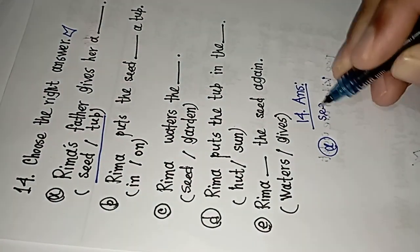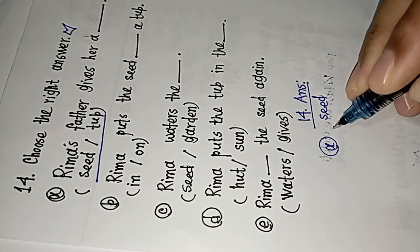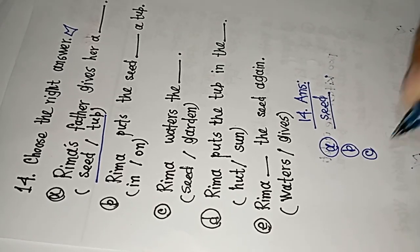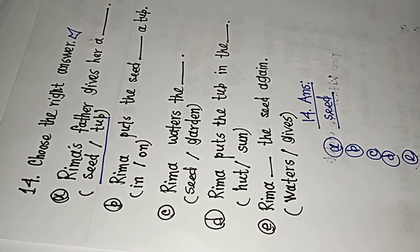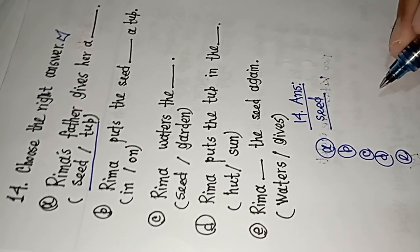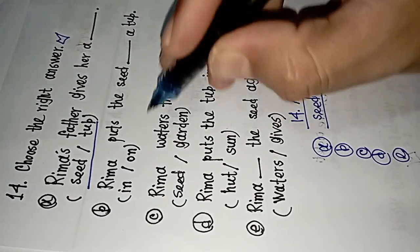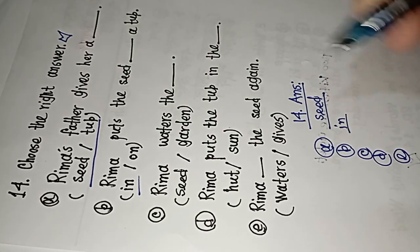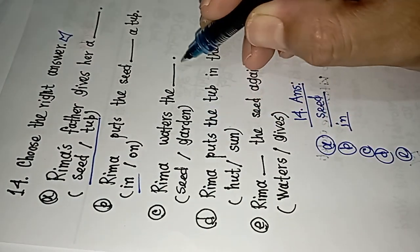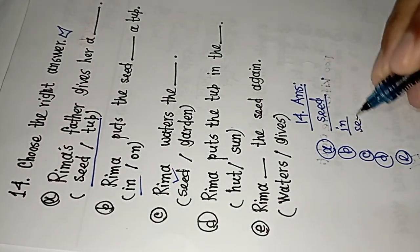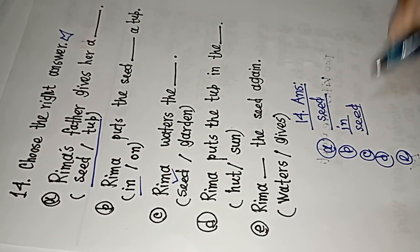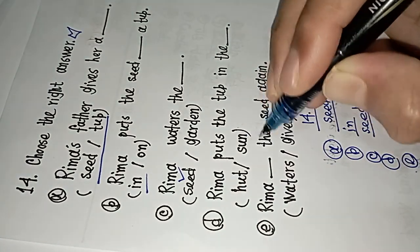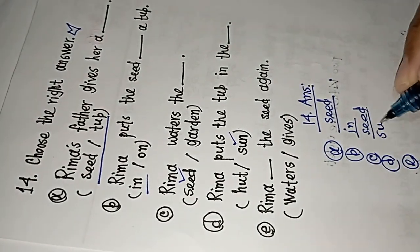We can underline this. Number b, number c, number d, and e — we have to put this. Number B: Rima puts the sheet in the dash — sun, sun, sun, sun.